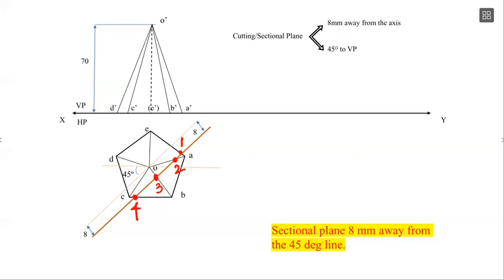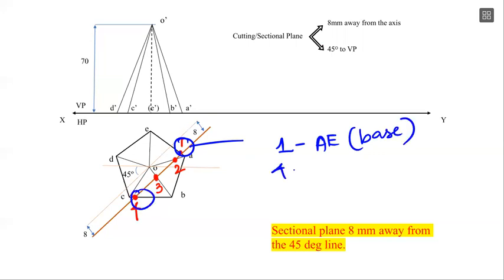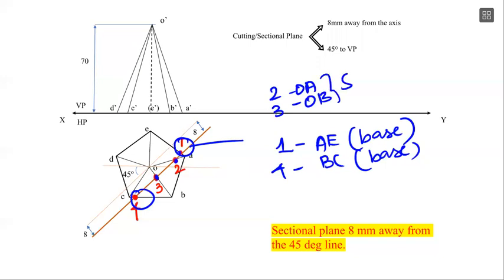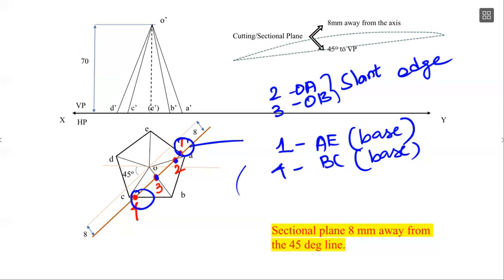To analyze the four cutting points: point number 1 is on the base edge - A is on the base. If you look at point number 4, it is on BC, which is a base edge. Points 3 and 2 are on slant edges: 2 is on edge OA, and 3 is on edge OB. So we have cutting points on both base edges and slant edges.